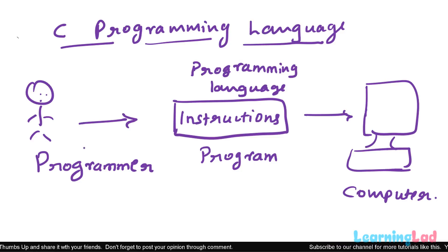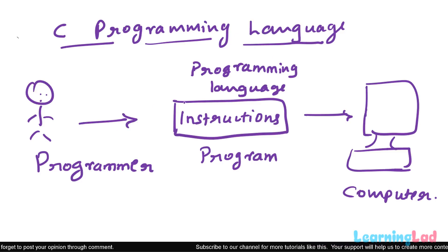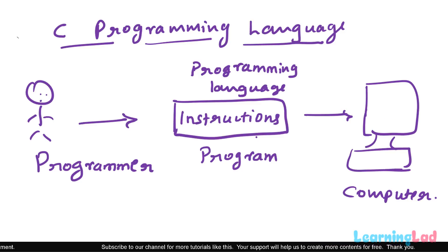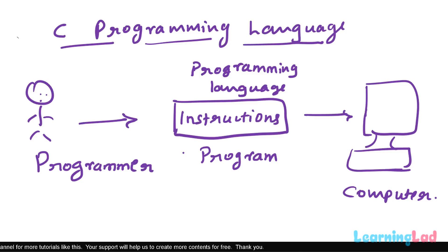As a programmer, we write programs or instructions using any of the available programming languages, and then the computer works according to those instructions. C language is one of the programming languages we can use to write computer programs.